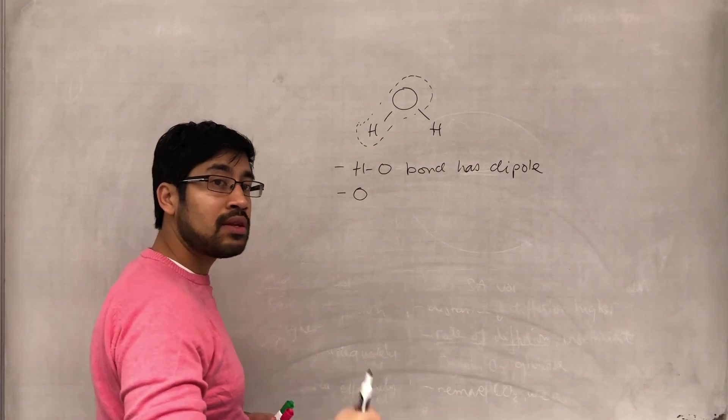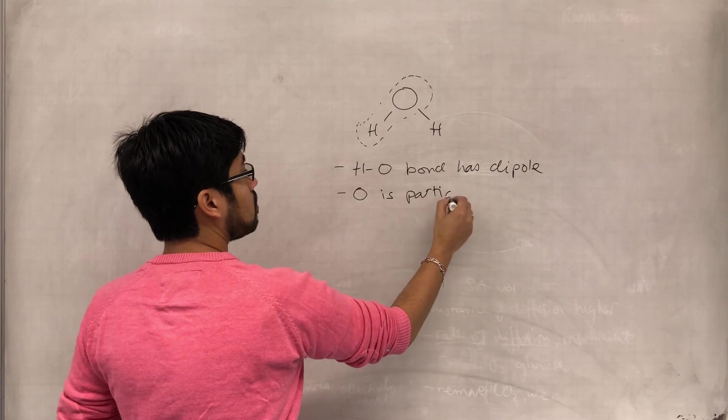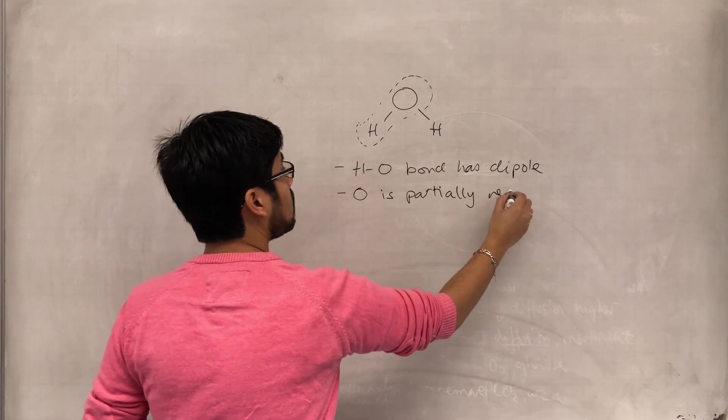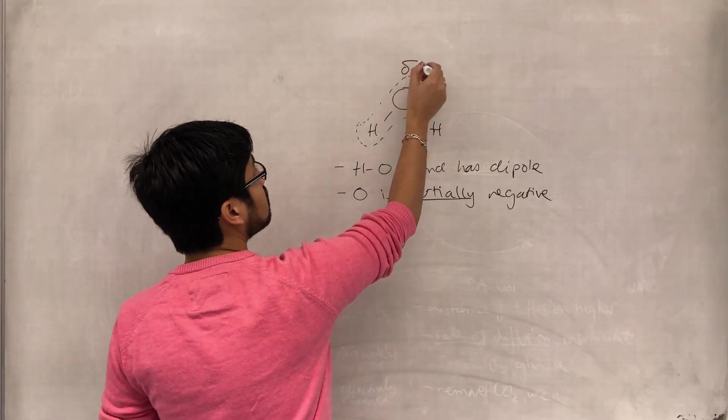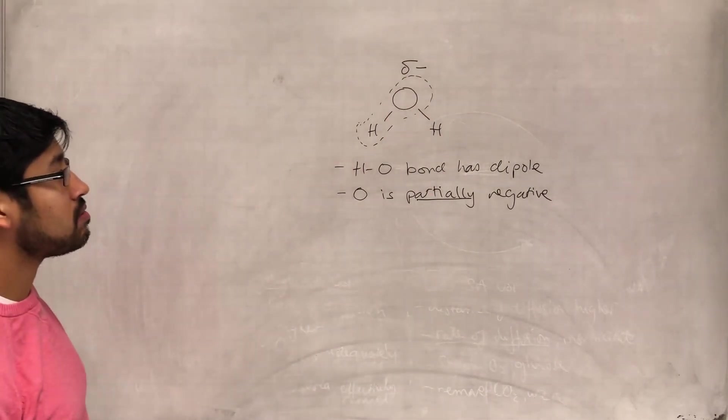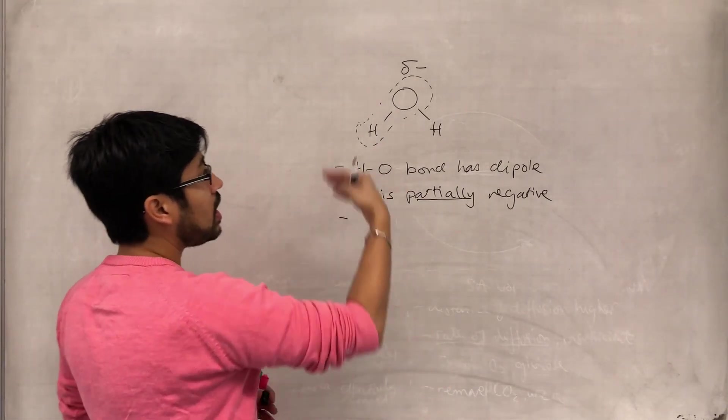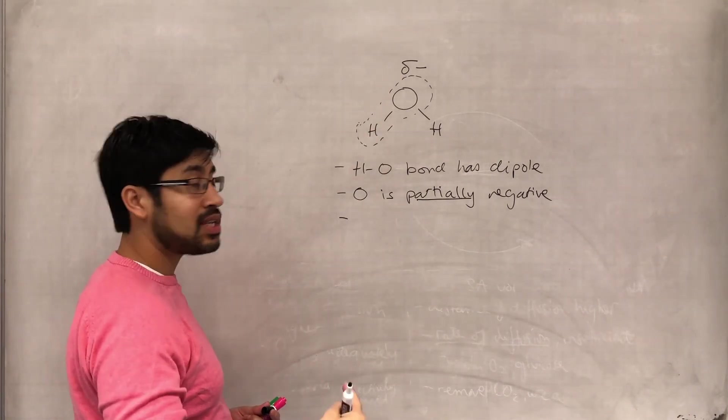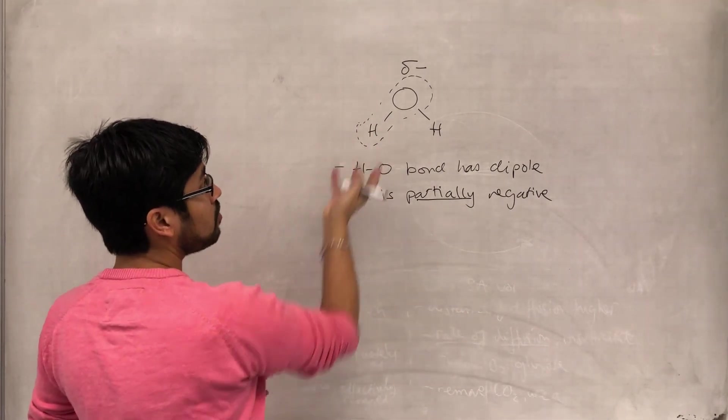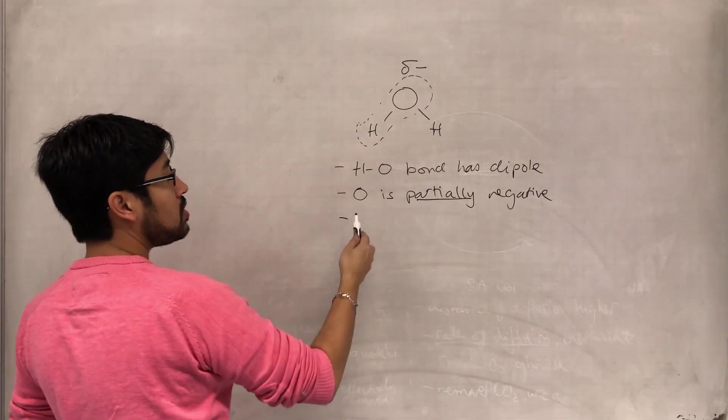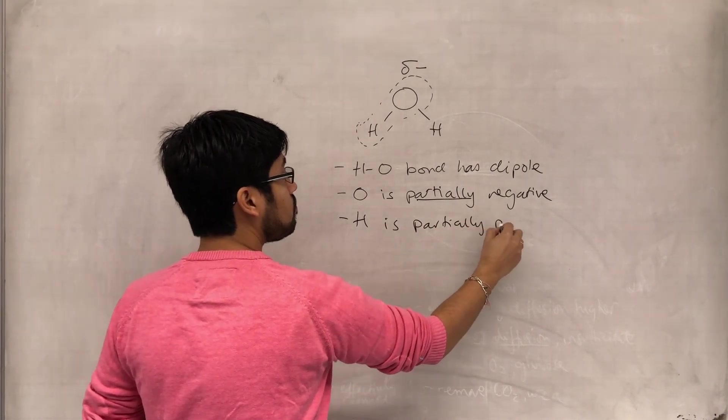So oxygen is partially negative, and the way we denote that is with a delta negative. If oxygen has a greater share of the electrons, it means that hydrogen has a smaller share, a lesser share of the electrons. And therefore, because the electrons are negative and they're mostly around the oxygen, hydrogen is partially positive.